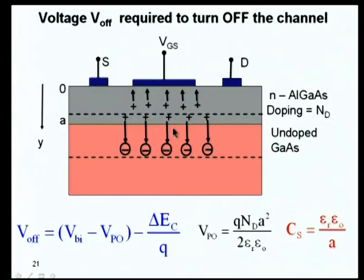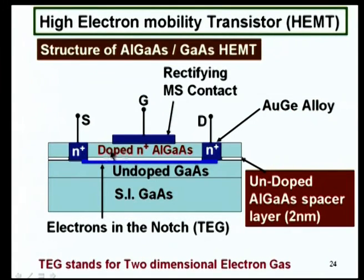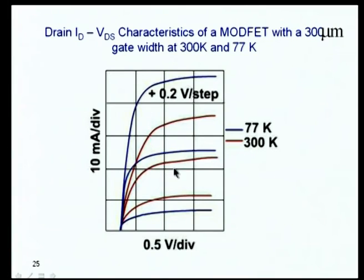Additionally, in practice a thin undoped AlGaAs spacer layer of about 1–2 nm is inserted between the doped AlGaAs and the GaAs channel. This prevents the moving channel electrons from experiencing scattering from the doped layer above. Optimization of this spacer layer also affects transconductance. This is a quick overview before examining measured device characteristics.